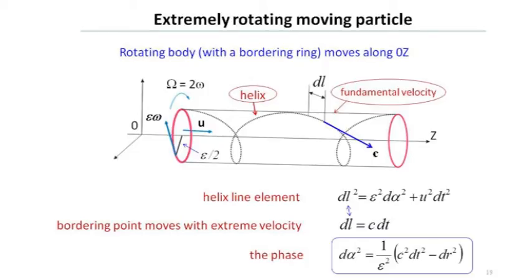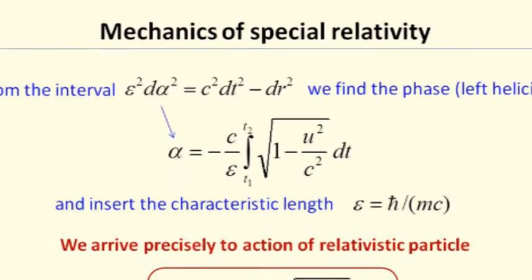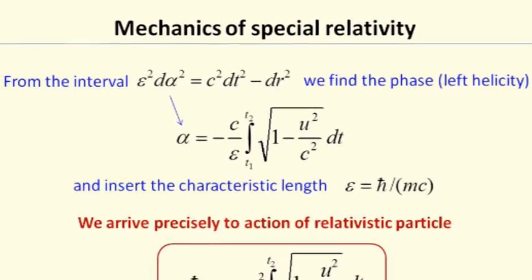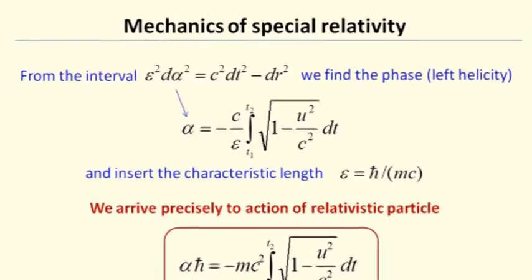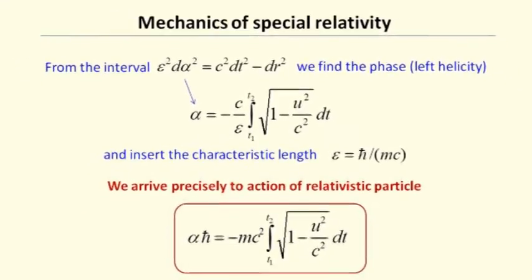As well, let the particle be rotating maximally fast, so that the velocity of the selected point is equal to the fundamental velocity. Under these conditions, we construct the line element of the helix, distinguish the rotation phase and express it through the velocity of light and the particle's speed. The result is again fantastic. We obtain an exact formula for the Lagrangian function of a relativistic particle.